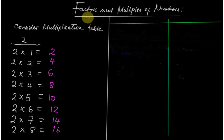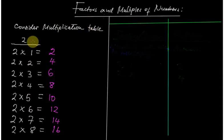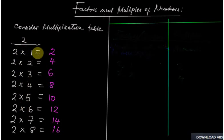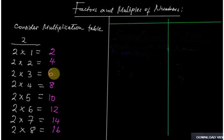We talk about factors and multiples of numbers. Let us start with a multiplication table — a very simple multiplication table of two — where we are going to regenerate this idea of factors and multiples of a number. So this is the table of two: two times one gives us two, two times two gives us four, two times three gives us six, and so on.